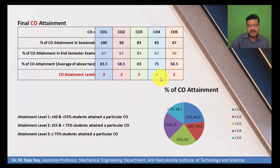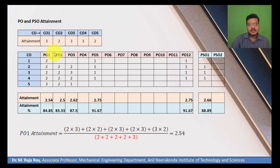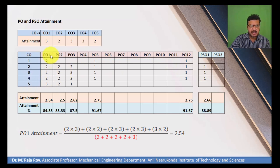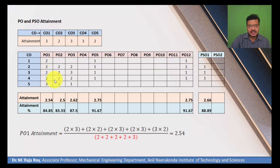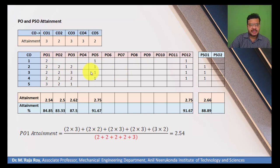After determining the CO attainment levels, the next step is PO and PSO attainment. These are the attainment levels for the 5 COs. The CO–PO–PSO mapping matrix maps the 5 COs to 12 POs and 2 PSOs. The values in this mapping matrix change from subject to subject.